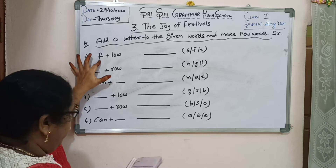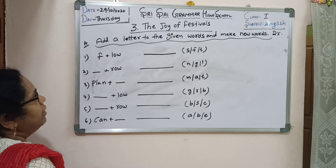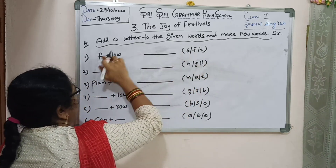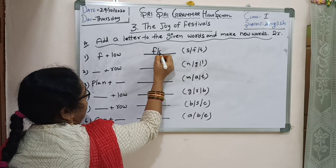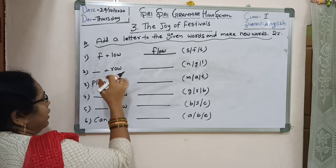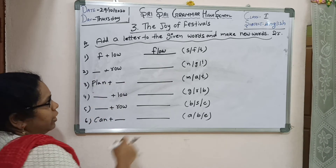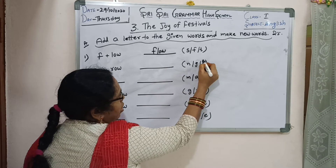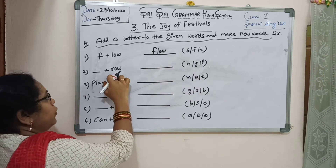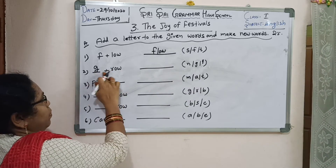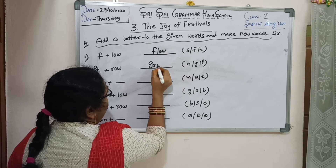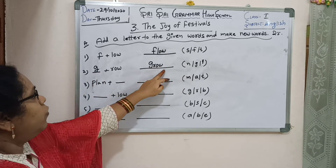For example: F plus L-O-W. We add the starting letter G — G plus R-O-W means grow. G-R-O-W. They became a new word: grow.